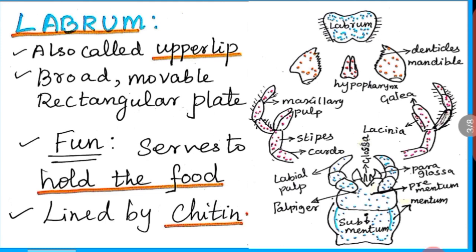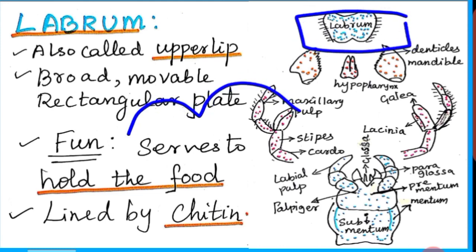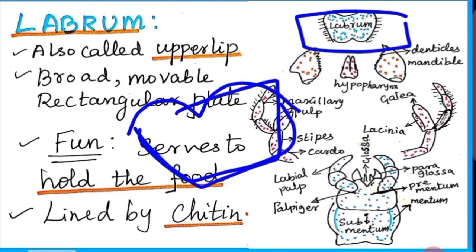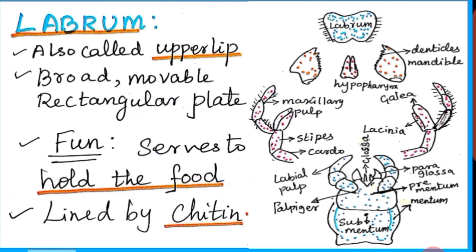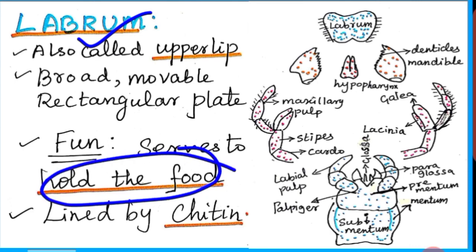Labrum is also called the upper lip. It is a broad, movable, rectangular plate. Its function is that it serves to hold the food. It is lined by chitin. When the cockroach takes up its food, the function of labrum is to hold the food.